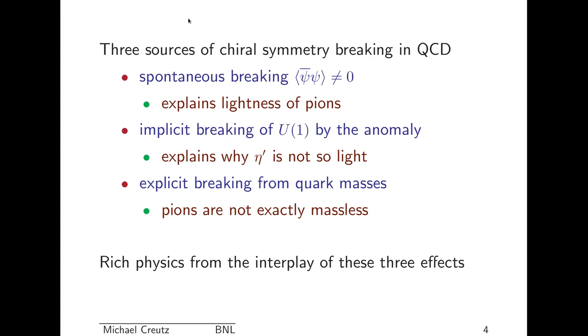Now this symmetry is broken in several ways, and three different ways are fairly obvious. First, there's spontaneous breaking. The psi bar psi itself gets an expectation value. This is the left with the right plus the right with the left. And this is very important to understanding the lightness of the pions. There's also an implicit breaking of a U1 symmetry by the anomaly, and this is supposed to explain why the eta prime meson is not as light as the other pseudo-scalars. There's also an explicit breaking from the quark masses, which is why pions are not exactly massless. There's really rich physics from the interplay of these three effects, and that's what the discussion here is all about.